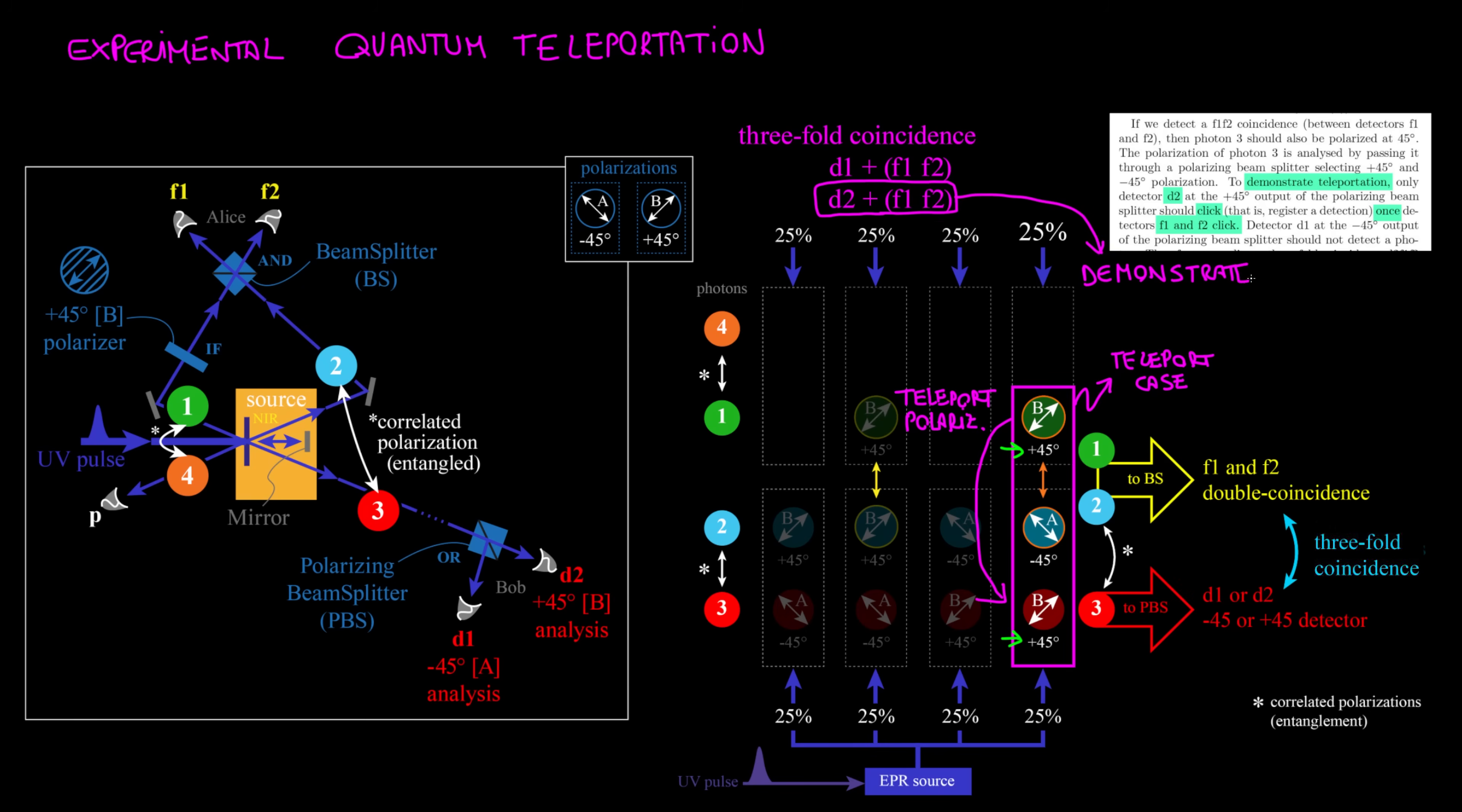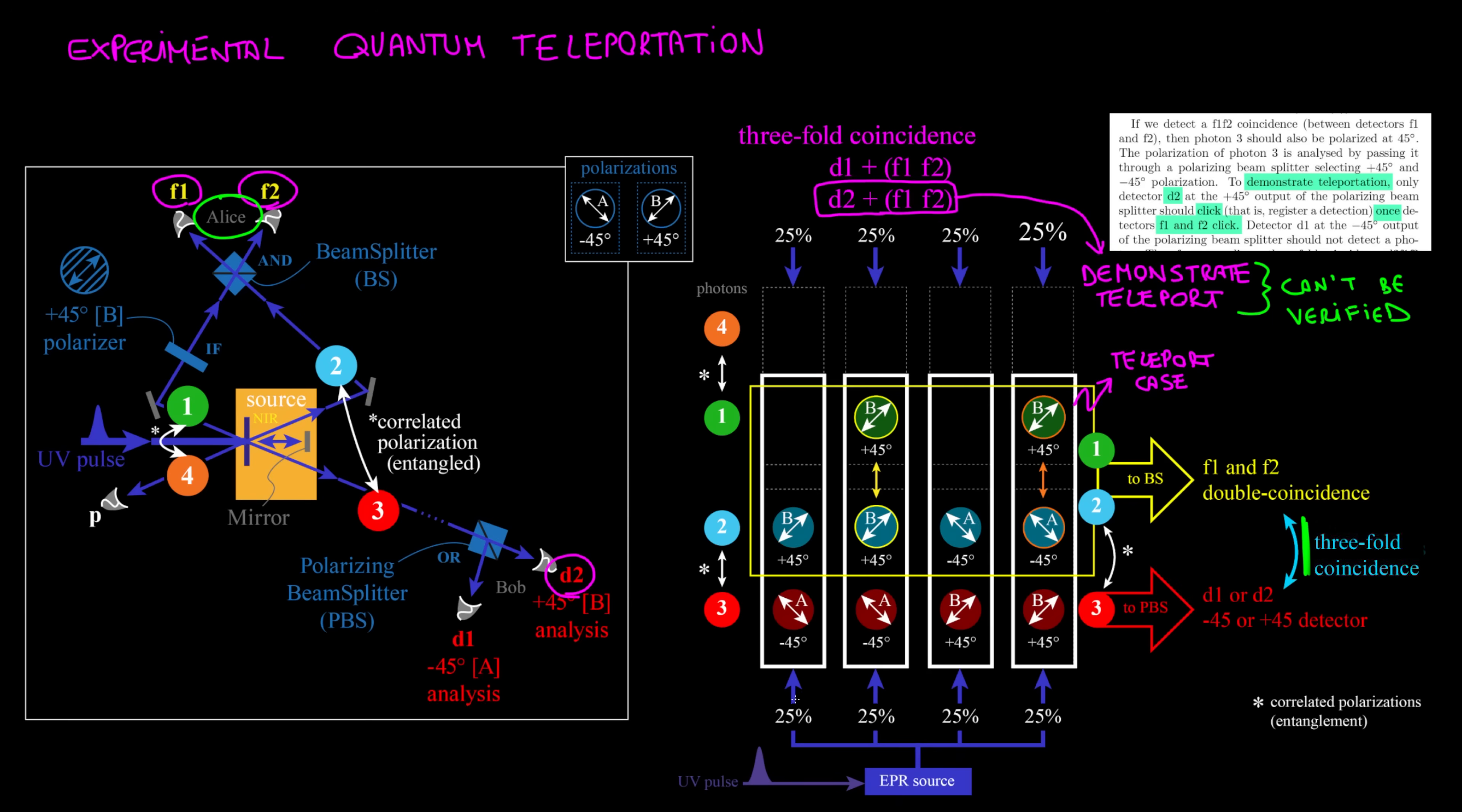In the experiment, the teleport is demonstrated when both F1 and F2 click, while photon 3 is in D2 plus 45. This statement cannot be verified since, on this side, even one photon can click both F1 and F2. So threefold coincidences can be triggered by all four possibilities. And we don't distinguish states in F1 and F2, so these two couples of outcomes can't be discerned. We can't know if this coincidence comes from this probability or this, because these two outcomes look the same even if one should be a teleport.